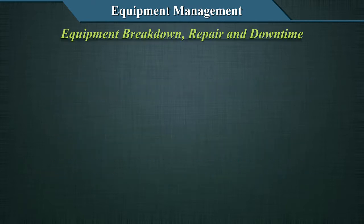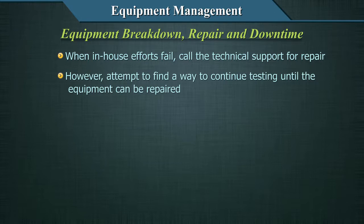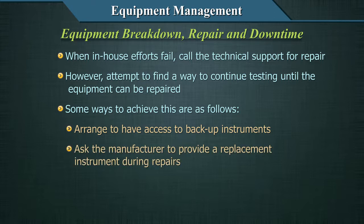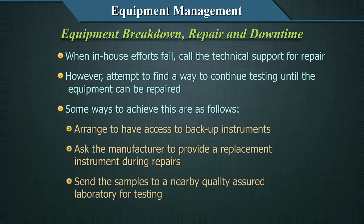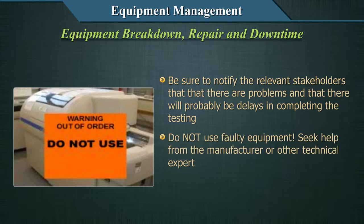Never attempt unauthorized maintenance or troubleshooting steps. Equipment breakdown, repair, and downtime: when in-house efforts fail, call technical support for repair. However, attempt to find a way to continue testing until the equipment can be repaired. Arrange to have access to backup instruments, ask the manufacturer to provide a replacement instrument during repairs, or send samples to a nearby quality-assured laboratory for testing. Be sure to notify relevant stakeholders that there are problems and that there will probably be delays in completing the testing. Do not use faulty equipment.